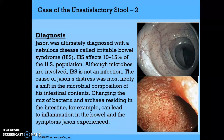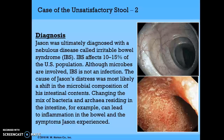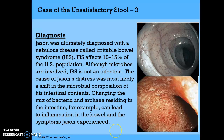The diagnosis: Jason was ultimately diagnosed with a nebulous disease called Irritable Bowel Syndrome, or IBS. IBS affects 10–15% of the U.S. population. Although microbes are involved, IBS is not an infection. The cause of Jason's distress was most likely a shift in the microbial composition of intestinal contents — a change in the mix of bacteria and archaea residing in the intestine — which can lead to inflammation in the bowel and the symptoms Jason experienced.